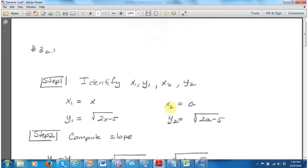The x2 is a, as we did back in the very beginning of class, and the y2 is found by plugging a into this formula for x. So you get the square root of 2a minus 5.